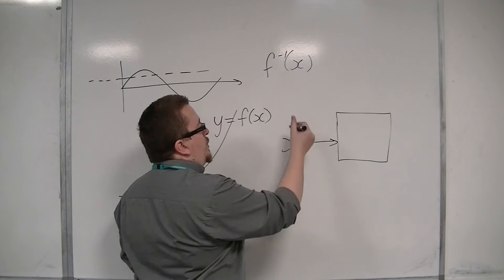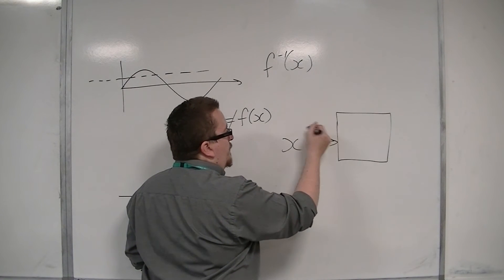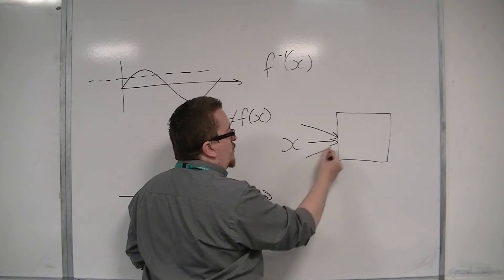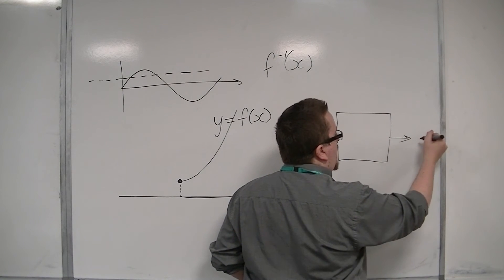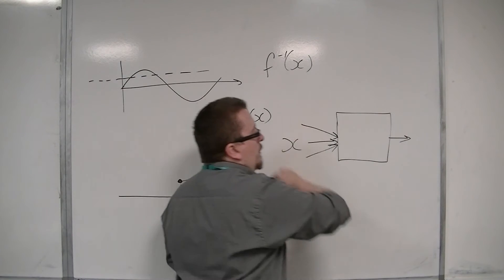and we could actually have many values going into this function machine, and getting out the same answer at the end, so we've got many-to-one.